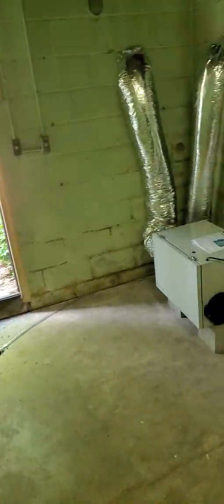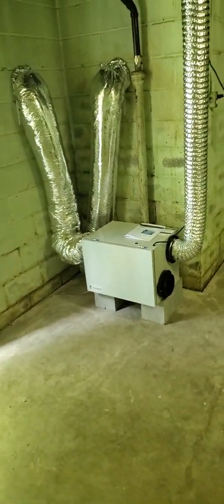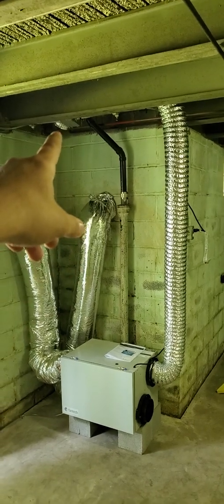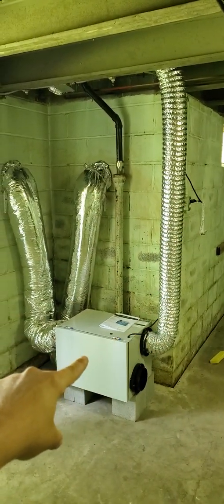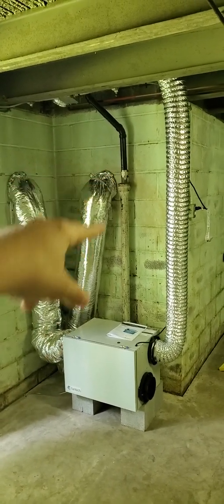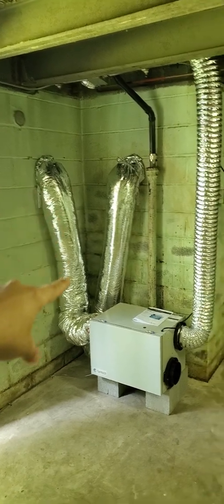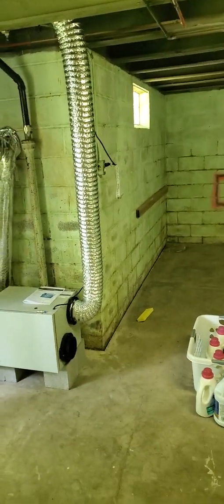So the next best option is either an HRV or an ERV. This particular unit is an HRV, a heat recovery ventilator, and what it's doing is drawing stale air from this basement in this pipe, diagonally down, and exhausts it out there. It brings in fresh air over here and blows the fresh air in this way.